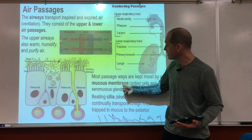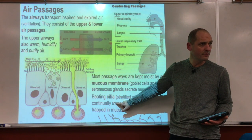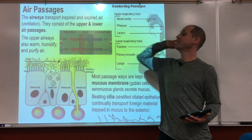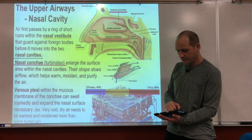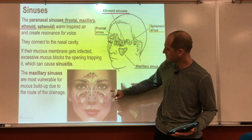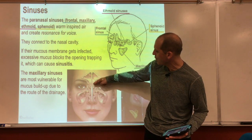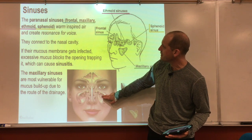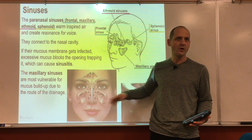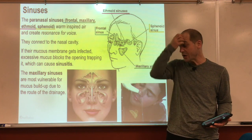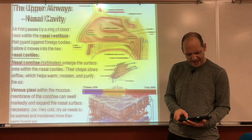Here are the mucous membranes. Another mechanism to keep the air passageways clean is cilia — their whipping action moves material out. We've got all these different sinuses: the frontal, the ethmoid, the sphenoid in the back, and the maxillary. They all drain down, but the maxillary drains against gravity, so that's the one most likely to become blocked.